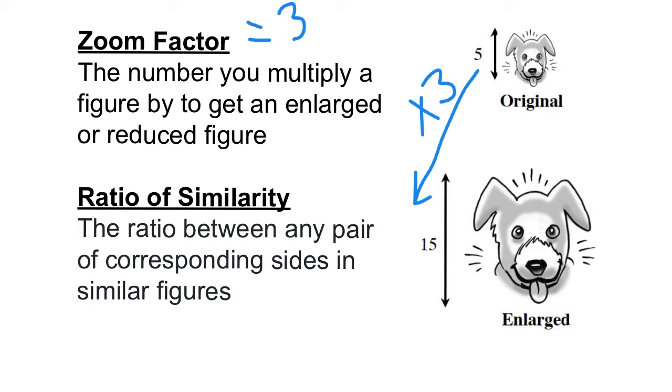There's actually two ways to do this ratio. If we were gonna do the ratio of the original to the enlarged figure, then what I would do is have 5 over 15, which would reduce to be one-third. The other option would be to do the enlarged figure over the original figure. So then we would start with 15 over 5, which again would give us 3 as our answer.